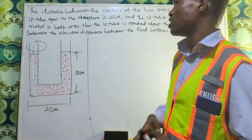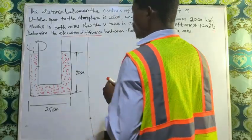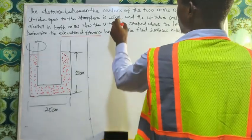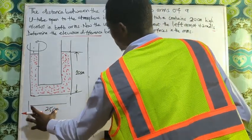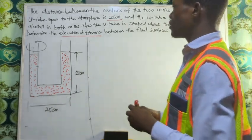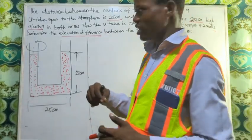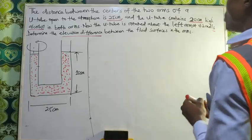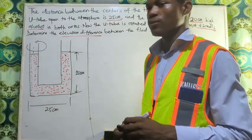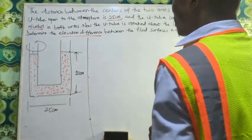There's the diagram below to help us solve this question. In this question, we have to determine the elevation difference. We've been given some of the parameters: the big R, the height of the fluid which is alcohol (the original height before rotation), and the angular speed of 4.2 radians per second.